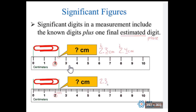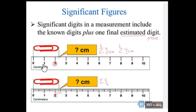We need to look at the markings on our measuring device, and then we estimate one more digit past that. For example, if we were measuring this paper clip on this ruler, this ruler allows us to be certain to the whole centimeter. Notice that our markings go from zero to one to two to three. So we can be certain that it's at least two centimeters.